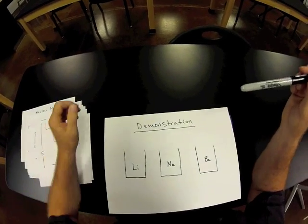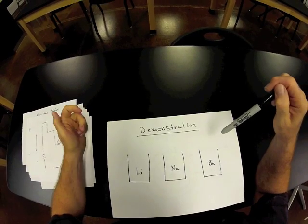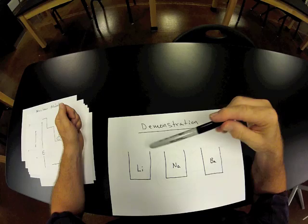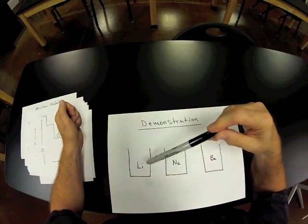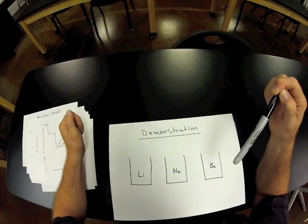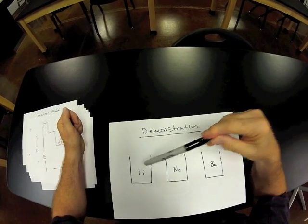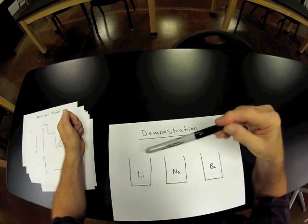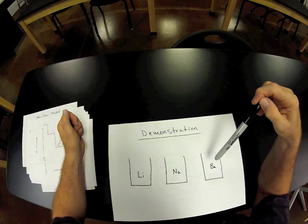Now, what we're going to do is cut away to a demonstration. You'll actually be carrying out this experiment in the laboratory. And what this is associated with is we're going to have a lithium salt, a sodium salt, and a barium salt in different beakers. Alcohol is added to each one of these. And then the alcohol was ignited using a flame.